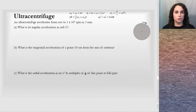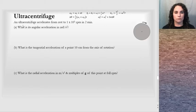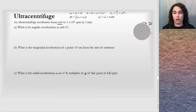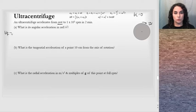The first problem is the ultracentrifuge. The kinematic equations for rotational motion and the centripetal acceleration equation are provided. An ultracentrifuge accelerates from rest to 1×10⁵ RPM in 2 minutes. I'll note that it's accelerating, so there's an alpha value. Omega initial is 0, and omega final is given in RPM. I'll convert omega final: 1×10⁵ revolutions per minute, converted to radians per second.